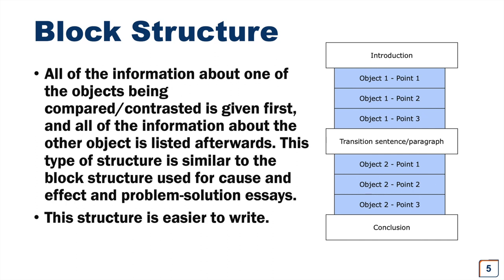So it would look something like this. First paragraph, introduction. Then your body. In your body you have object 1 point 1, object 1 point 2, object 1 point 3. Then you have your transition sentence or transition paragraph. Then you have object 2 point 1, object 2 point 2, object 2 point 3. And then you will have your conclusion. Conclusion paragraph.